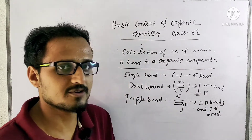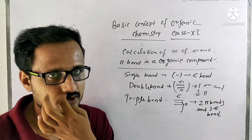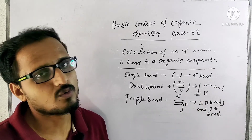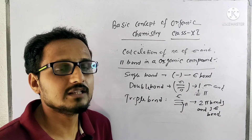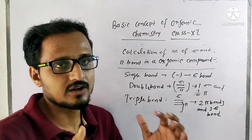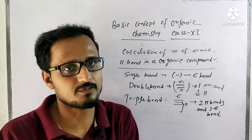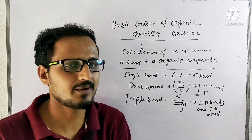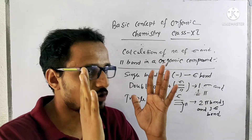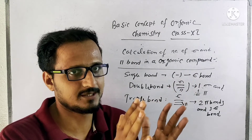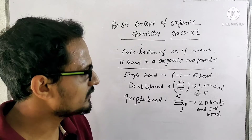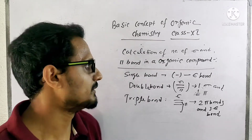So if an organic compound is given and you are asked to calculate how many sigma and pi bonds are there: single bond = sigma; double bond = 1 pi + 1 sigma; triple bond = 2 pi + 1 sigma. We will know more about this from the chemical bonding chapter, and another video will be given on that. Now we will apply these rules to examples.